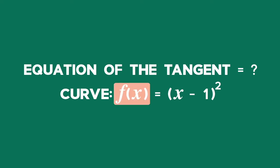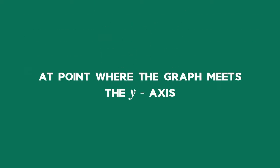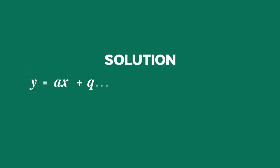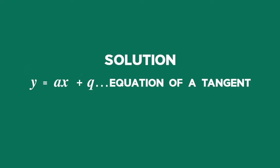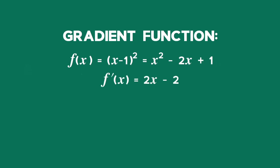Example 2: Find the equation of the tangent to the curve f(x) = (x − 1)², which equals x² − 2x + 1, at the point where the graph meets the y-axis. Solution: A tangent is a straight line, hence the defining equation is y = ax + q. To find the gradient of the tangent a, we need the gradient function of f(x) = (x − 1)² = x² − 2x + 1. So f′(x) = 2x − 2.